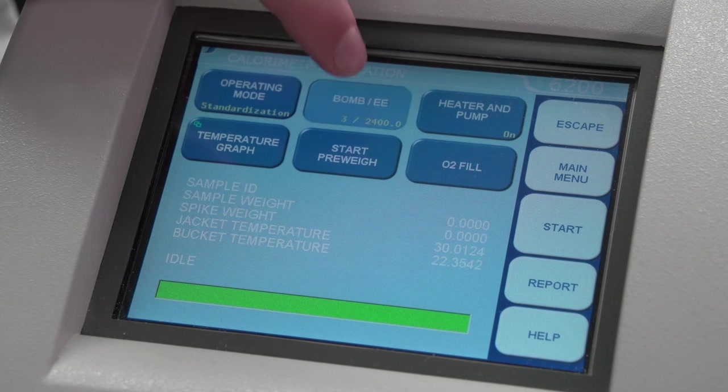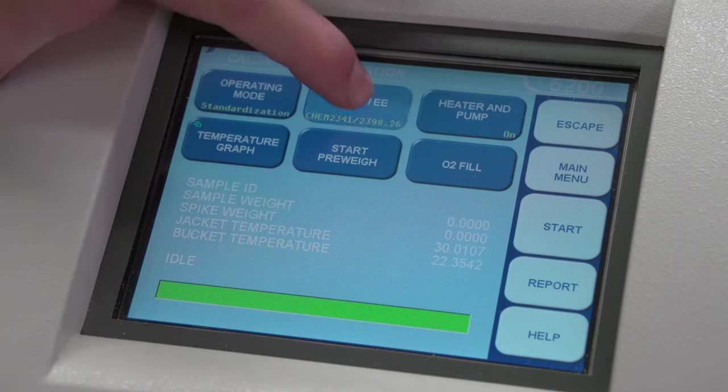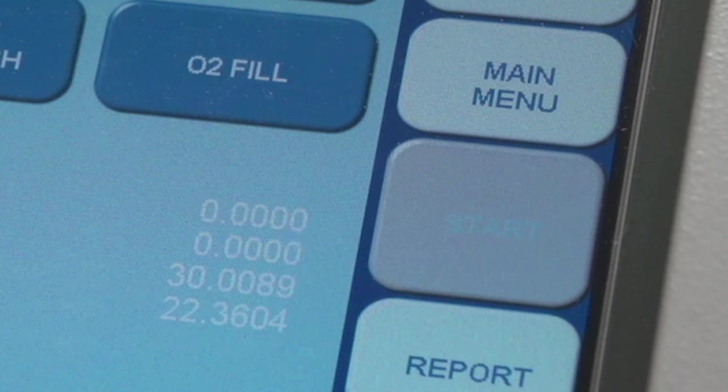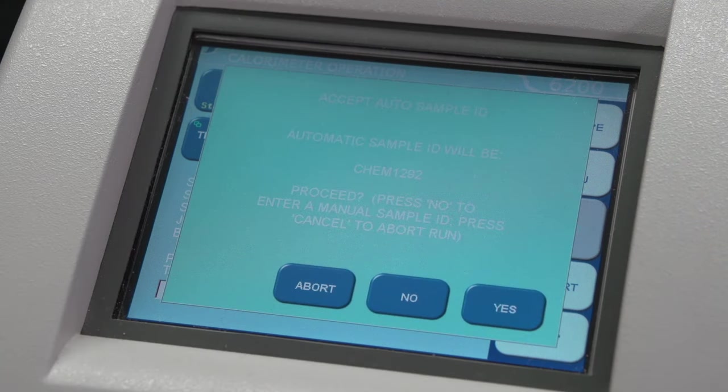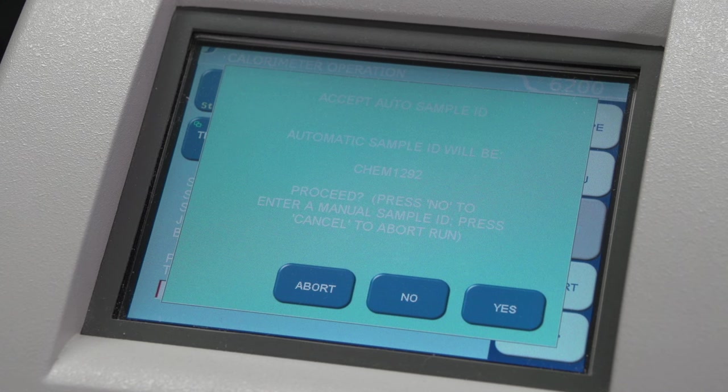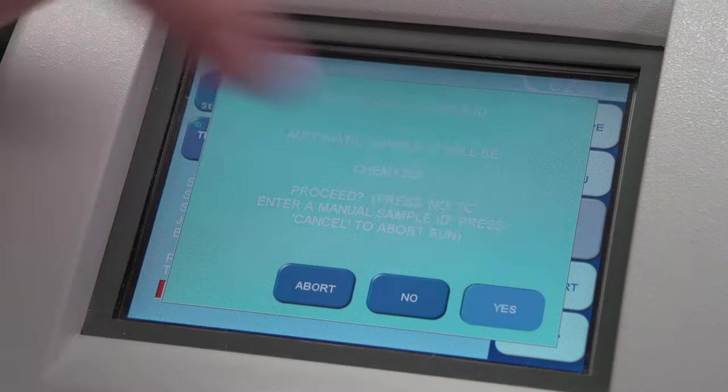Toggle the bomb ID button until 1 or Chem 1280 is displayed. The start button will be grayed out until the temperature stabilizes. Press the start button when it becomes available. If there is a rattling noise, press the abort button immediately. If it is safe to proceed, press Yes.